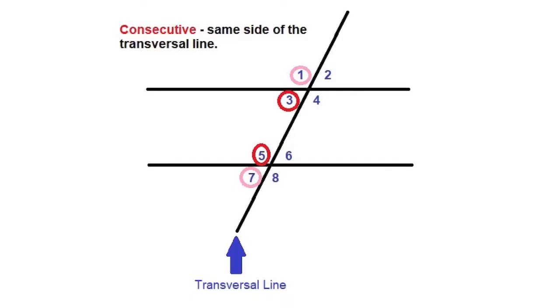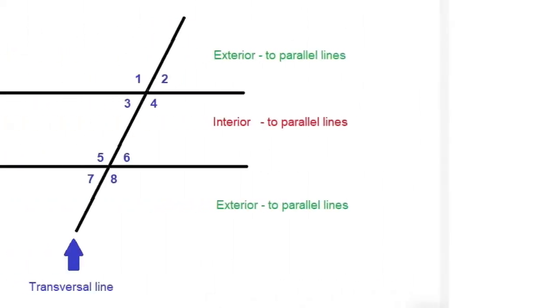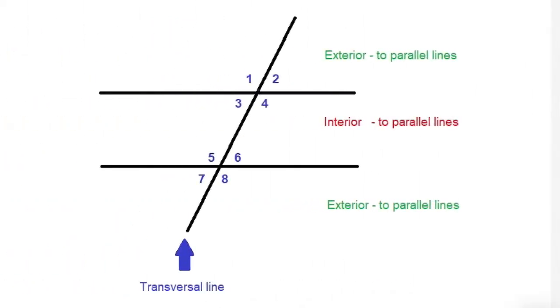As you can see, 3 and 5 are congruent, and they're on the same side of the transversal line. Likewise, 1 and 7 are congruent. Whereas alternate and consecutive are relative to the location on the transversal line,